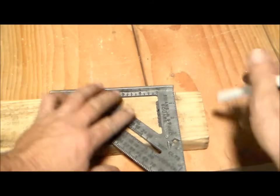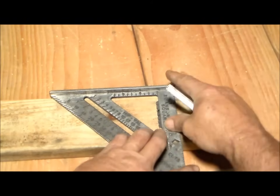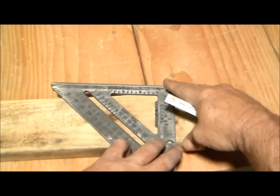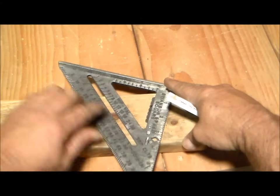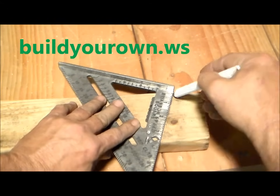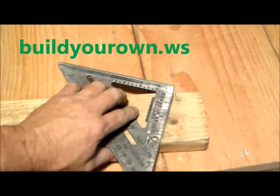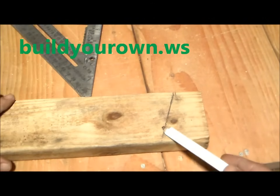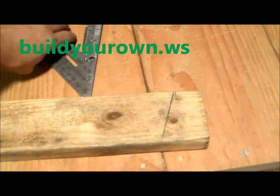If I want to start my mark right here, this is called the pivot point. We'll put it right here. All you've got to do is pivot it until the top lines up with the number four. We'll come over here and make a mark. Now you have a mark for your 4/12 pitch cut.